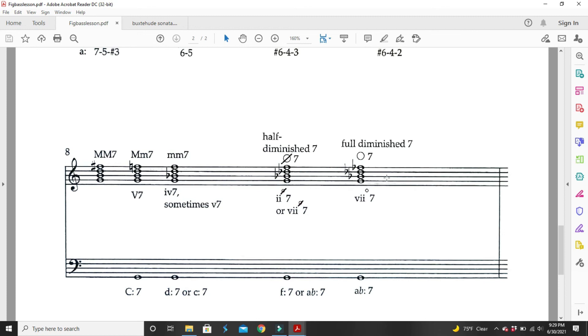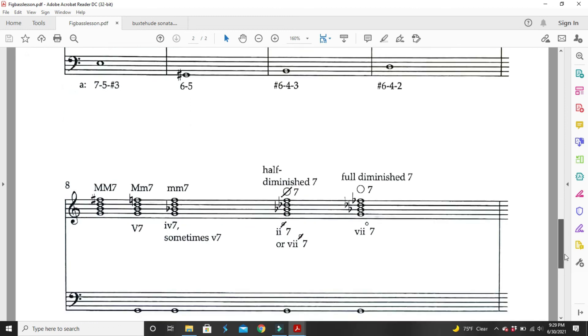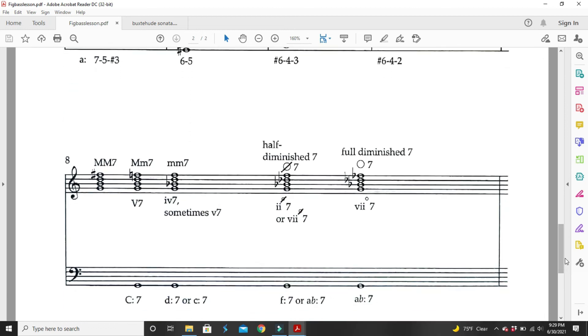And then fully diminished seven would be all minor thirds. So, G, Bb, Db, and Fb. That's our introduction into seventh chords. I hope it was helpful. And I will see you next time for furthering the application. We'll see you next time.